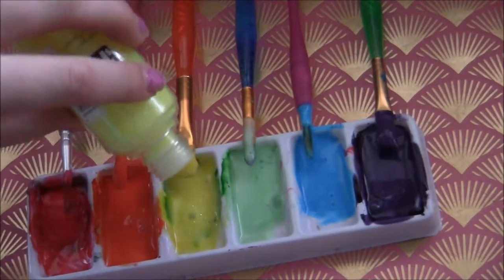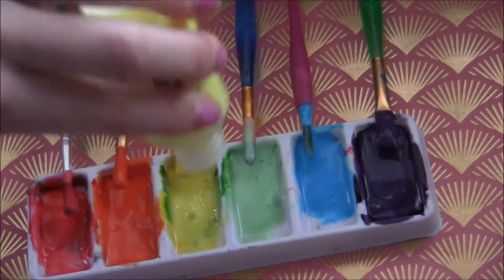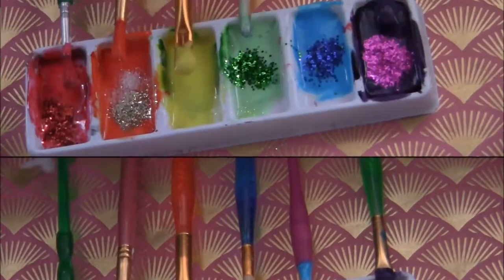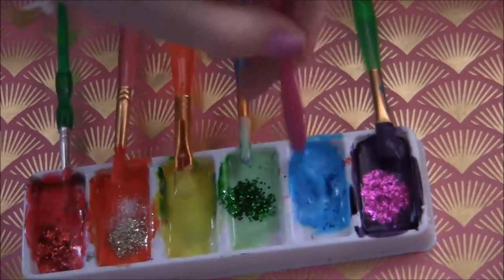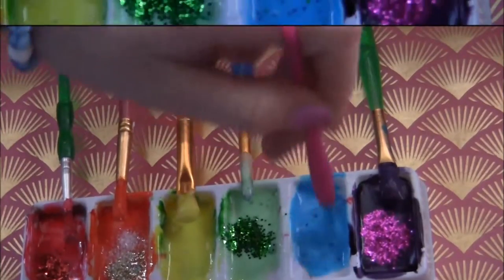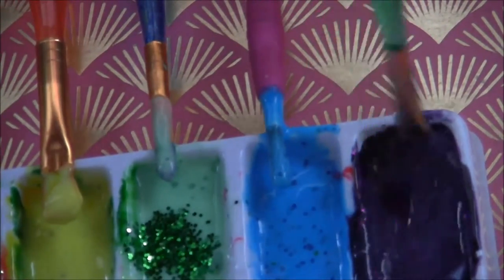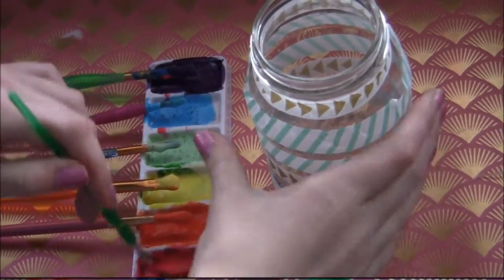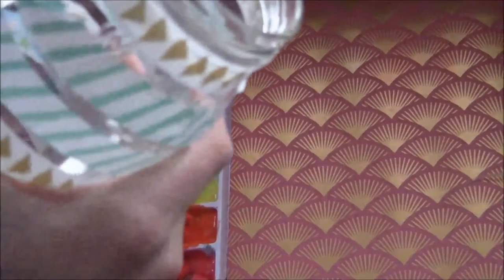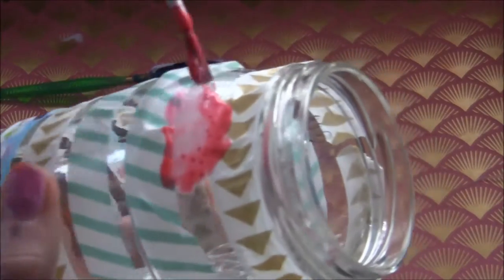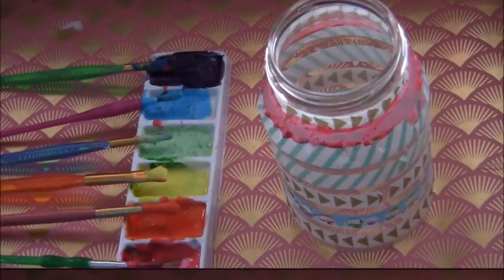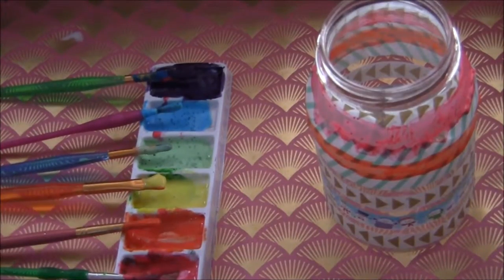This is optional, but I'm adding some glitter into my glue mixture just because it looks really cool when it's dry. Next, I'm just going to paint the glue onto the jar. And you can totally do any pattern like zigzags or something. I just went for stripes. And I'm just painting on all the colors.